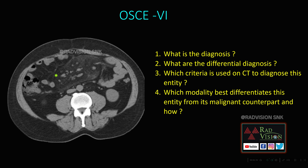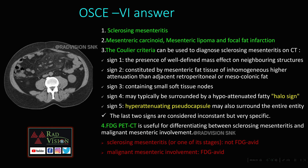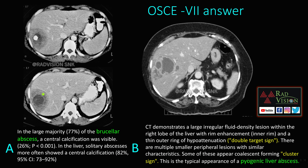The next case is sclerosing mesenteritis. There is a well-defined mass-like lesion causing mass effect on adjacent structures, constituted by mesenteric fat of inhomogeneous higher attenuation than adjacent retroperitoneal or colonic fat, with multiple soft tissue nodules. A fat halo sign and hyperattenuating pseudocapsule are seen — these two findings are very specific for sclerosing mesenteritis. FDG PET is helpful in differentiating it from malignant mesenteric involvement: sclerosing mesenteritis is not FDG avid, whereas malignant involvement is.